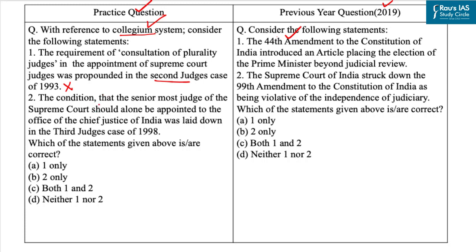So the first statement is incorrect. Now the second statement: the condition that the senior-most judge of the Supreme Court should alone be appointed to the office of Chief Justice of India was laid down in the Third Judges Case of 1998. This statement is also incorrect. From 1950 to 1973, the practice of appointing the senior-most judge as Chief Justice was followed. This established convention was violated in 1973 and 1977 when A.N. Ray and M.U. Beg were appointed as CJI by superseding senior-most judges. This government discretion was curtailed in the Second Judges Case, where the Supreme Court ruled that the senior-most judge should alone be appointed as Chief Justice of India.